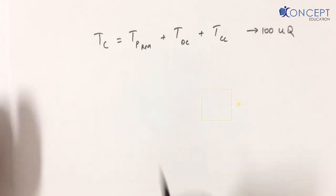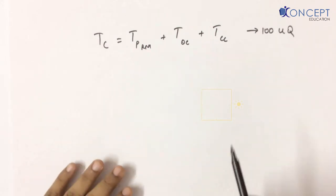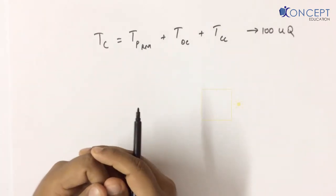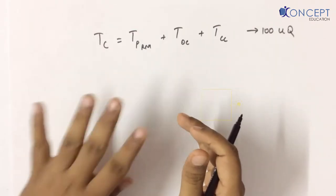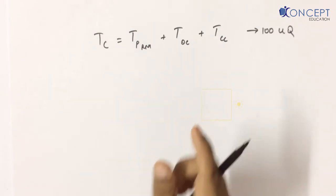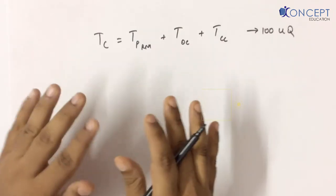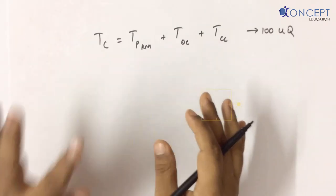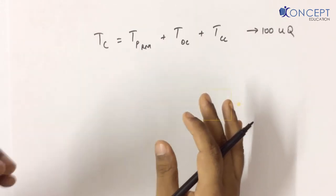Is question ko solve karne ke liye mere paas do tariqe hain. Ek hai ranker's approach, jo main aapko is video mein sikhaane waala hoon. Anyone who wants to get a rank in their CA curriculum, aapko is tariqe se sochna start karna padega. And the next video is for the people who just want to pass. So aap abhi decide kar lijiye — if you want to score a rank and learn how rankers think, you got to see this video. Agar sirf pass hona hai, aap ye video skip kar dijiye — aapko academically ek mark ka bhi hurt nahi hoga, uski guarantee main deta hoon.